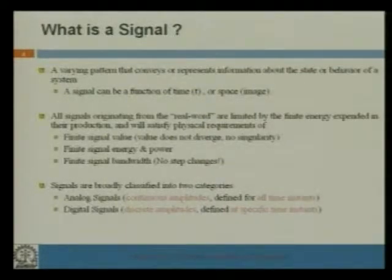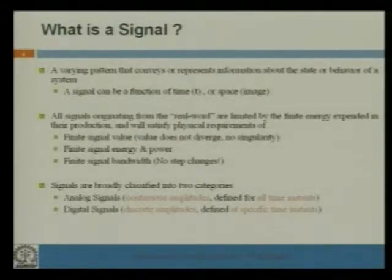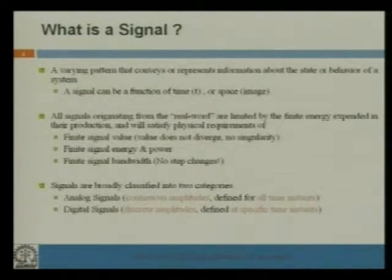What is a signal? A signal is a varying pattern that conveys some information. The signal may be a function of time or a function of space. All signals basically have a finite signal value — they have some finite energy and power and a limited bandwidth. For instrumentation signals such as pressure or temperature signals, their bandwidth is very low, limited to around 5 kHz or 10 kHz frequency. For biomedical signals, the signal frequency is even lower — within 5 Hz or 10 Hz.